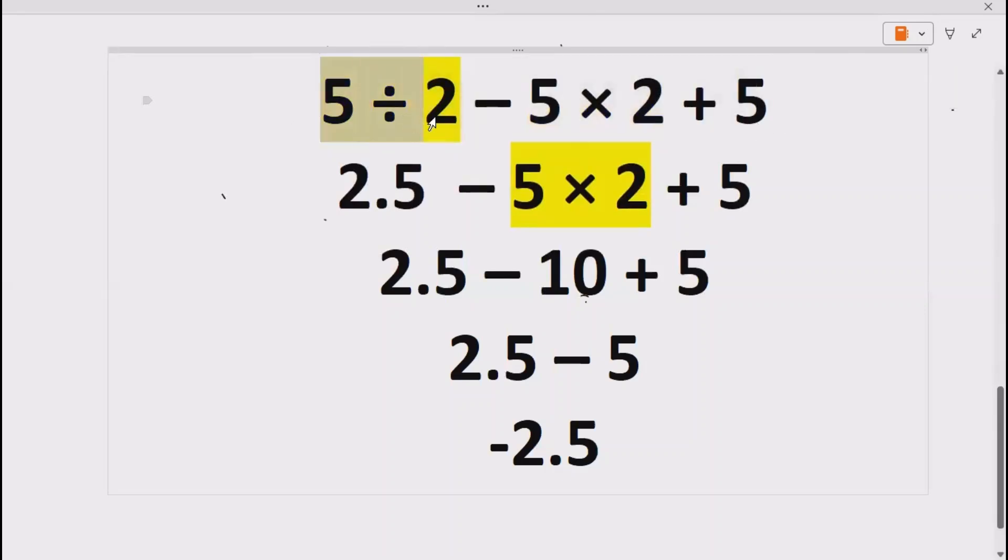So 5 divided by 2 gives us 2.5 minus 5 into 2 plus 5 remains as it is.